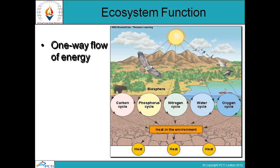Looking at ecosystem functions: there are different cycles operating in an ecosystem. The carbon cycle explains how carbon moves from inorganic matter into living organisms — from producer to consumer to decomposer — and then back from organic to inorganic form. The very important forest cycle involves one-way flow of energy. Additionally, there is the nitrogen cycle, water cycle, and oxygen cycle — all different cycles involving organisms at different levels, with energy and matter transfer and heat production.